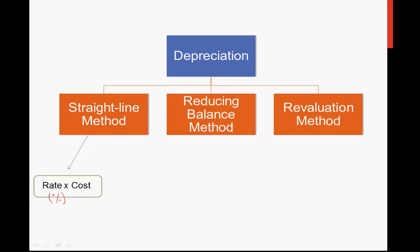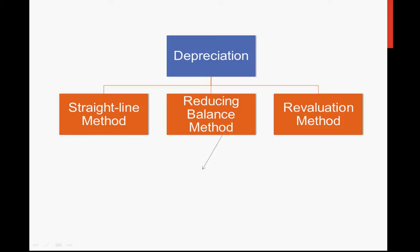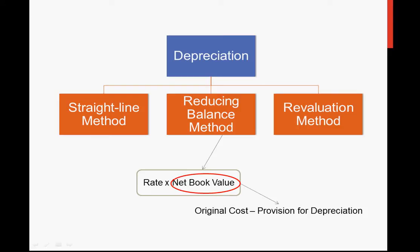These formulas may look foreign to you now — don't worry, I will show you by example. For the reducing balance method, it's simpler — you have only one formula: rate times net book value. Net book value is original cost minus provision for depreciation. Again, don't worry yet. Let me explain what provision for depreciation means.